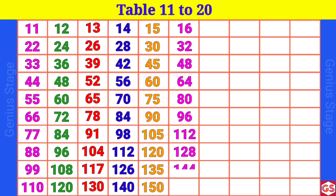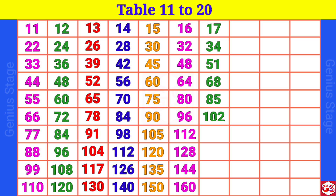16 10s are 160. 17 1s are 17, 17 2s are 34, 17 3s are 51, 17 4s are 68, 17 5s are 85, 17 6s are 102, 17 7s are 119, 17 8s are 136, 17 9s are 153.